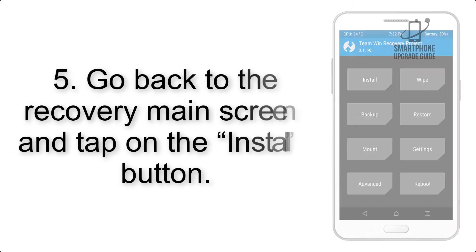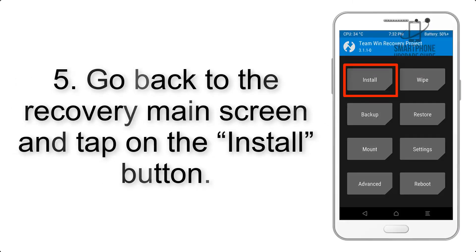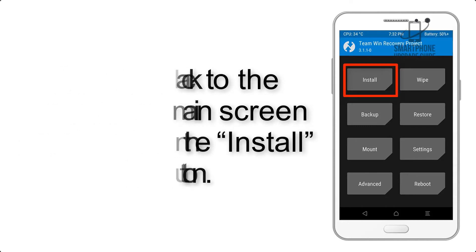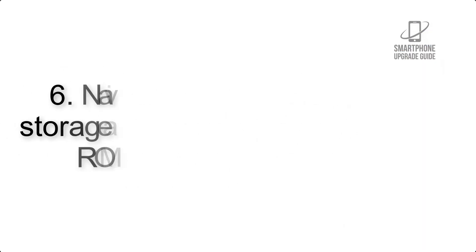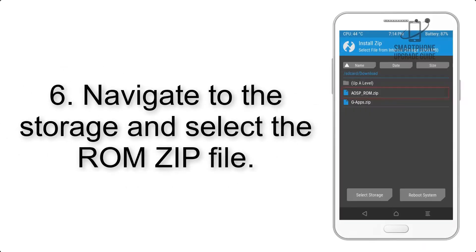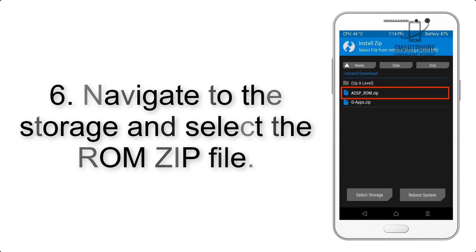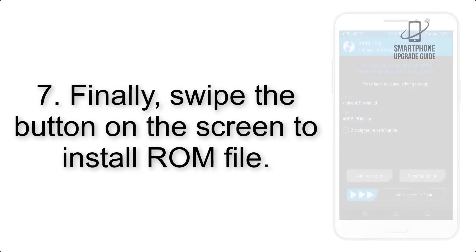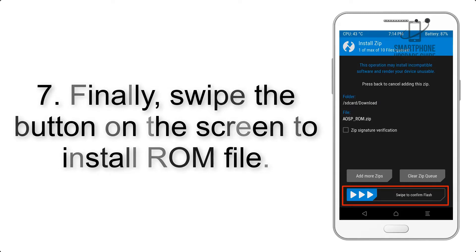Step 4: Swipe the button to wipe the device. Step 5: Go back to the recovery main screen and tap on the Install button. Step 6: Navigate to the storage and select the ROM zip file.